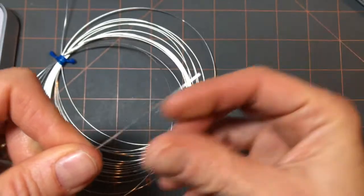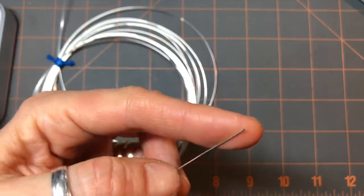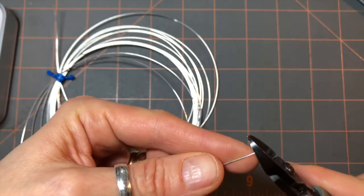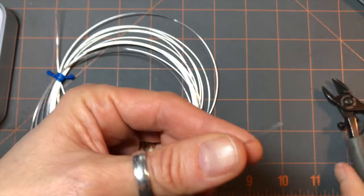I'm gonna be using 22 gauge wire and I'm gonna be working off the spool. So I'm gonna cut my end flush before I start.